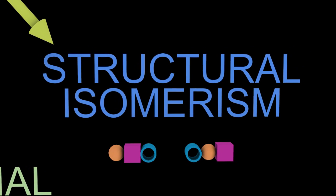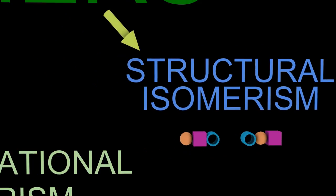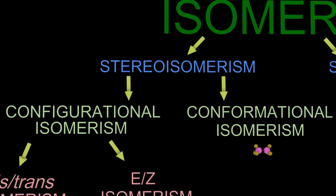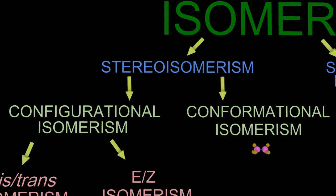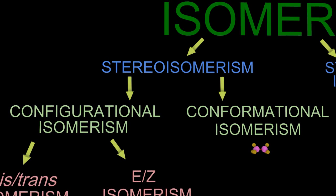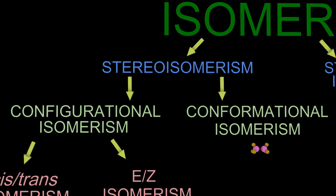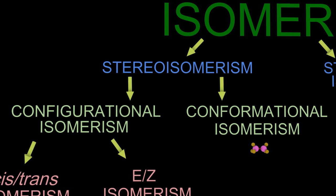Moving on to stereoisomers — those are different arrangements of atoms in space, and they can be split into configurational or conformational isomers.